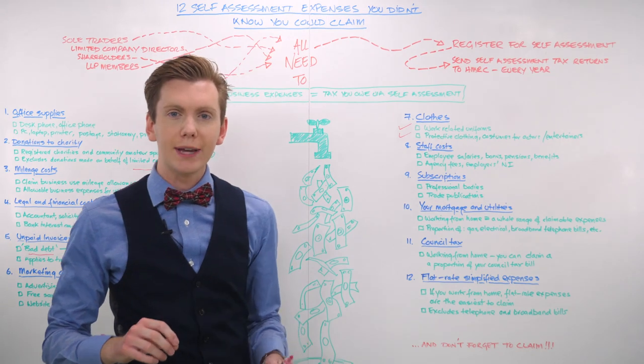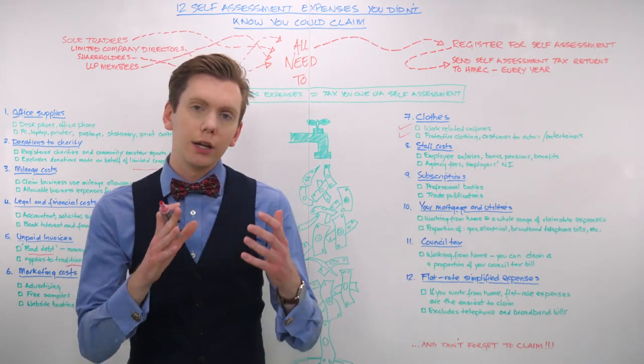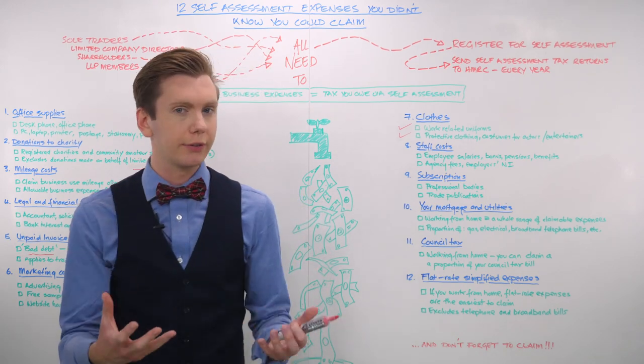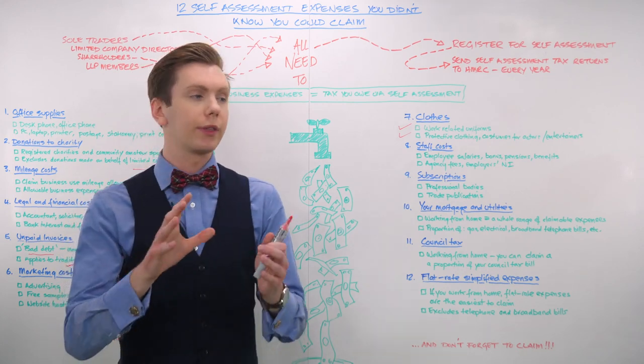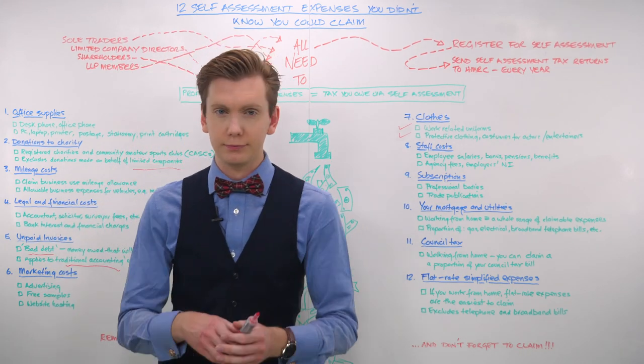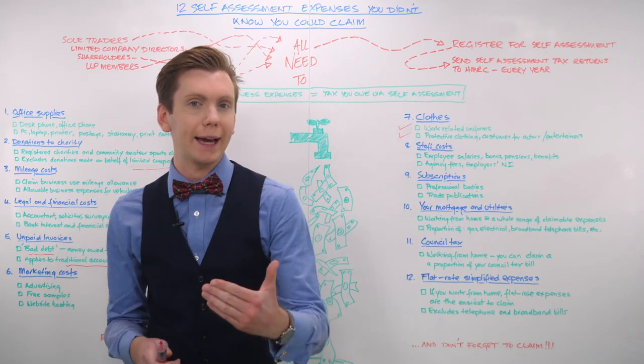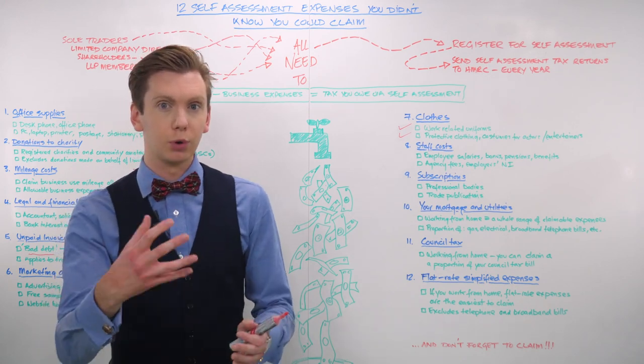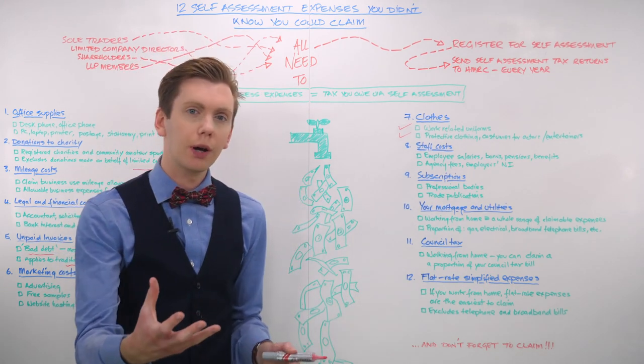Up next at number 10, your mortgages and utilities. If you work from home, you've got a whole range of self-assessment expenses you should be claiming, although there are some crucial caveats you need to bear in mind. You can claim a proportion of your gas, electric, water, broadband, and telephone bills as allowable expenses when working from home.